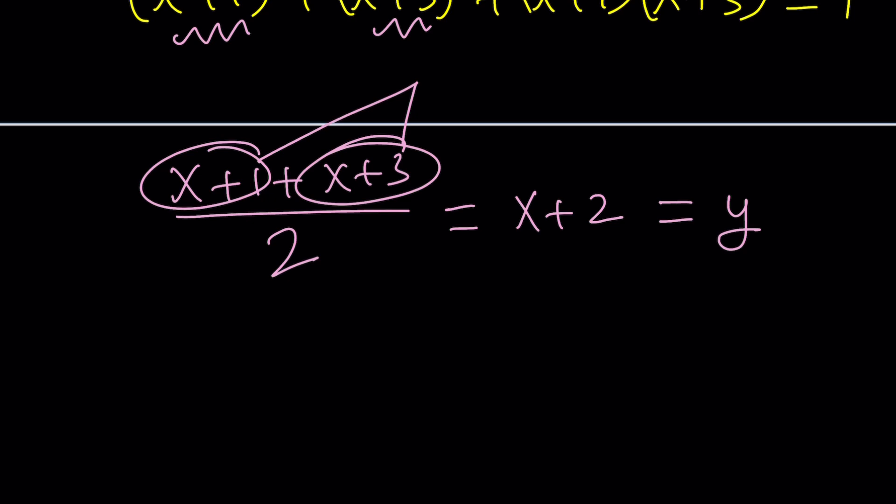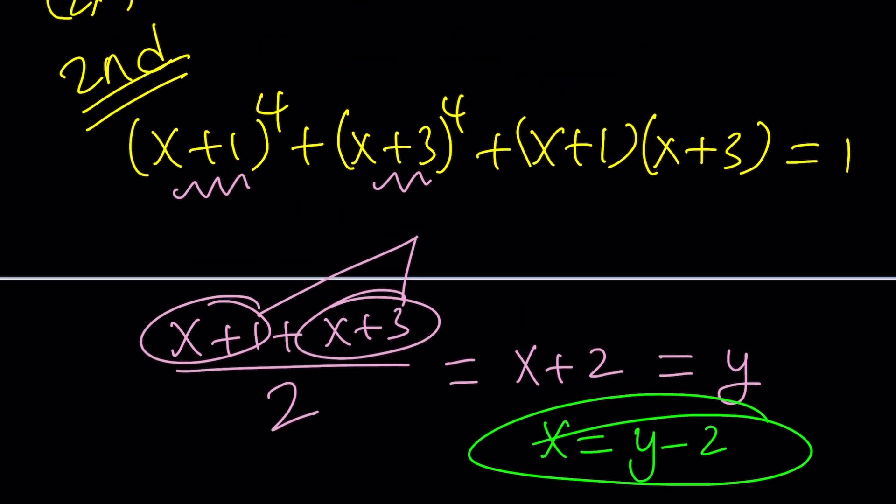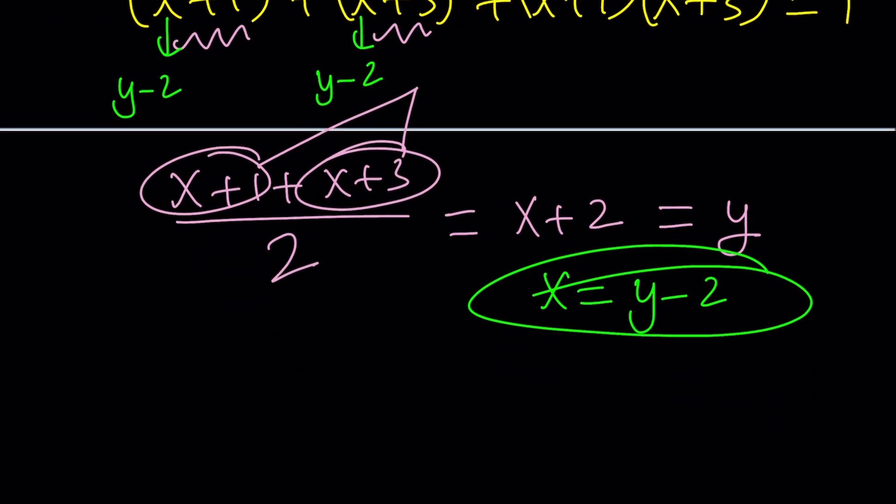Since we don't have (x+2) in this equation, we can replace x with (y-2) instead. It's the same thing, but it's easier. Replace x with (y-2) here and here. You're going to realize that the first one turns into (y-1) to the fourth and the second one turns into (y+1) to the fourth. That's why this substitution is so powerful. Now, what's going to happen? It's just going to follow the same pattern. You're going to continue with this and that. Make sense? Done? Almost done.